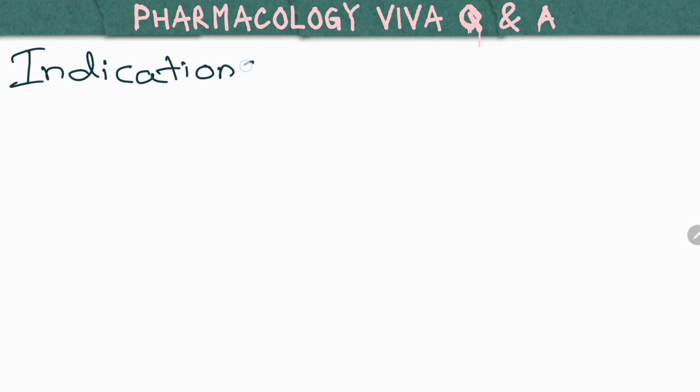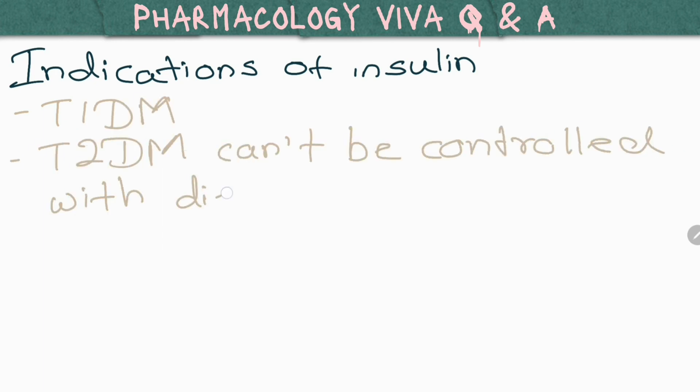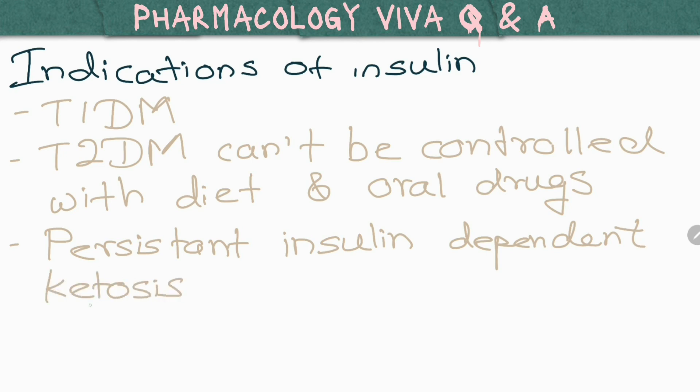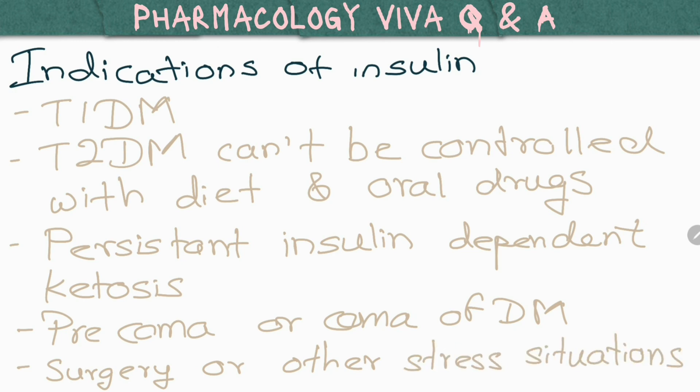What are the indications for insulin? Type 1 diabetes mellitus, Type 2 diabetes mellitus which cannot be controlled with diet and oral medications, persistent insulin-dependent ketosis, pre-coma or coma of diabetes mellitus, and surgery or other stress situations.